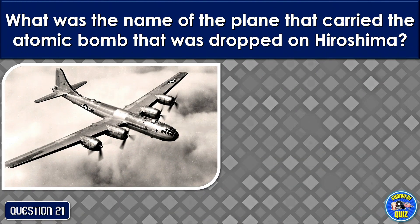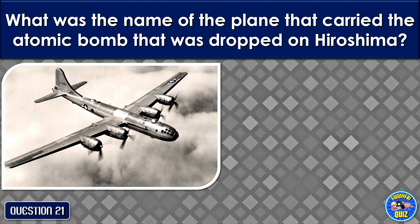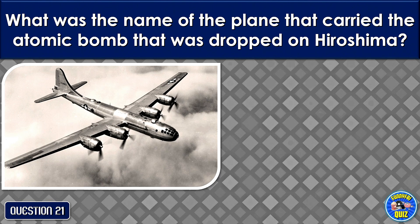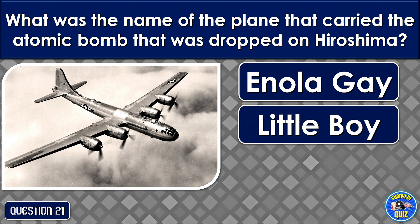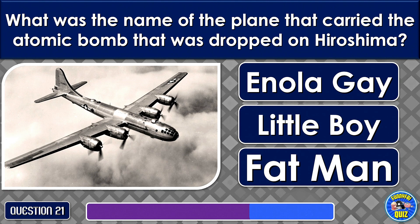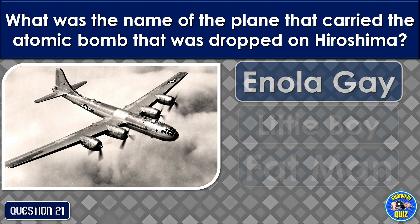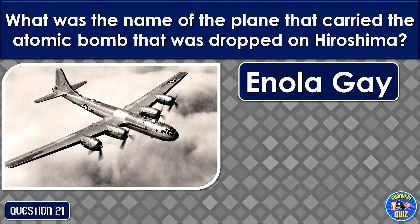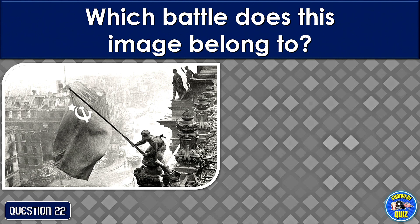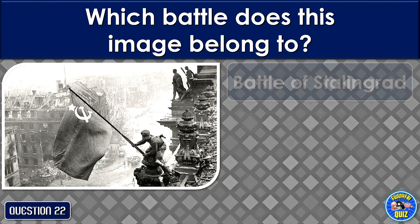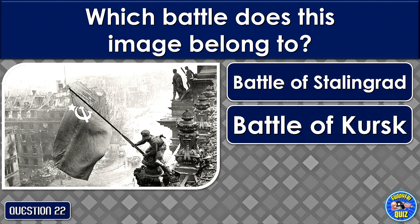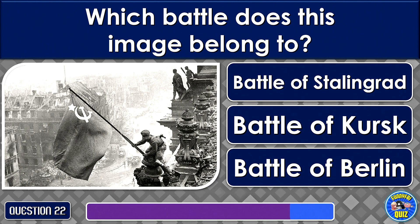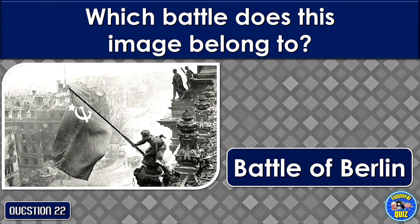What was the name of the plane that carried the atomic bomb that was dropped on Hiroshima? Enola Gay. Which battle does this image belong to? The Battle of Berlin.